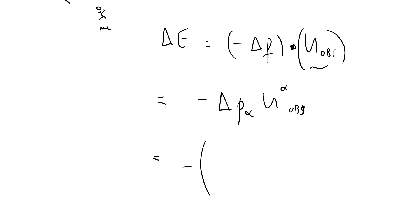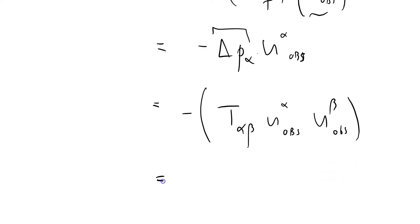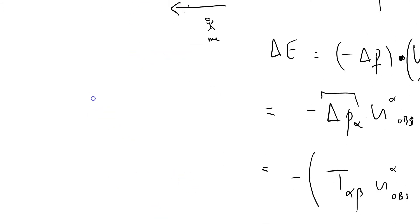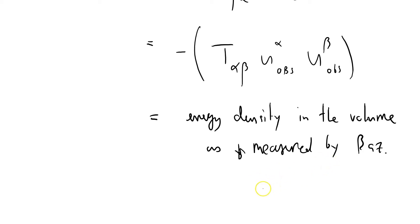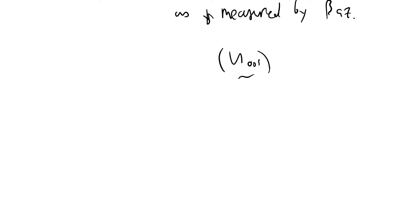We can expand this term in terms of the stress-energy tensor: T_αβ u^α_obs u^β_obs, and that equals the energy density in the volume as measured by Baz — as measured by Baz in his spaceship, which is cruising along at speed u_obs. I'm going to call that ΔE.